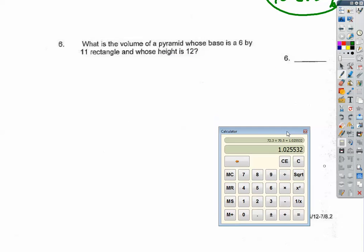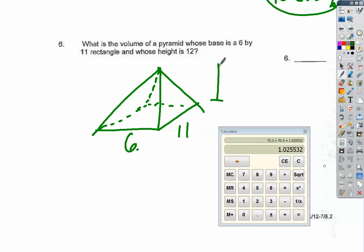Okay, what is the volume of a pyramid whose base is six by eleven, it's a rectangle. So that's six by eleven, and whose height is twelve.